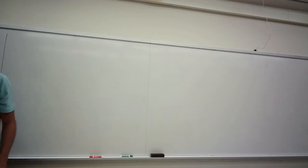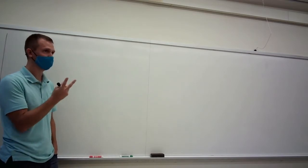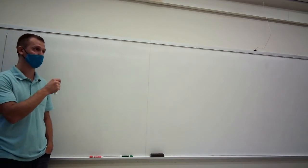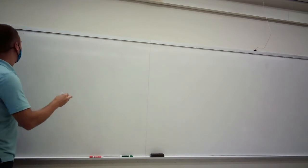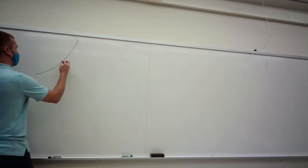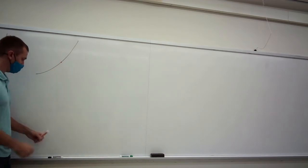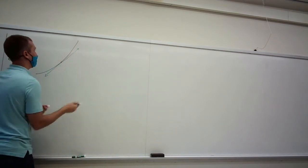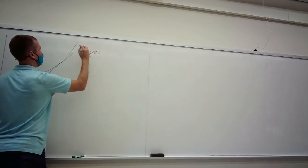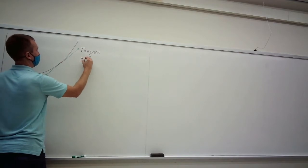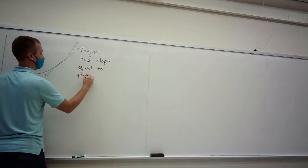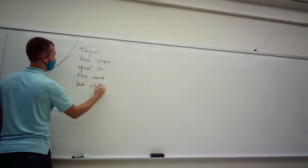I said this was a different type of question than you're used to, because usually when you find a tangent line or the slope of a line, you're using two points — you use that slope formula, which gives you average slope. For this one, we're actually trying to find the tangent line's slope given just one point. That's the slope of what we call the tangent line — same word as the trig function, but a different meaning here.